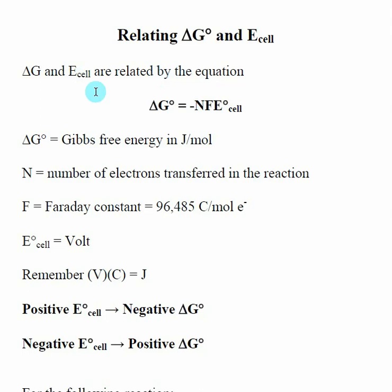So there's a formal equation that says delta G naught is equal to negative NF E naught cell. So we know about delta G and we know about E naught cell, let's take a look at N and F. And with this, the equation is not that hard, but the tricky part is keeping track of the units involved and then N for the reaction.